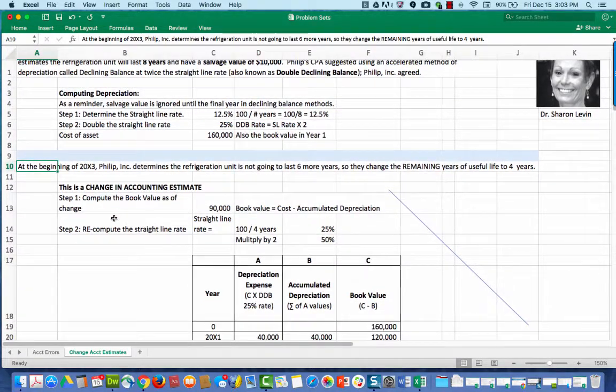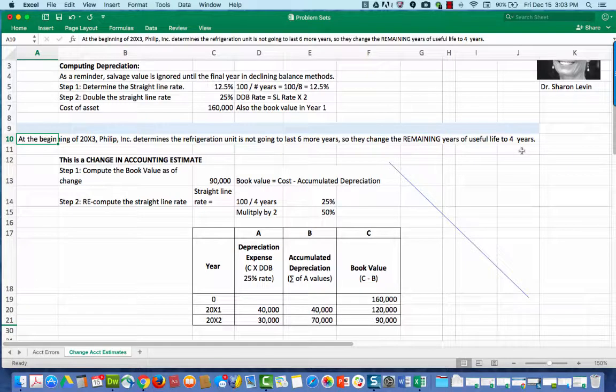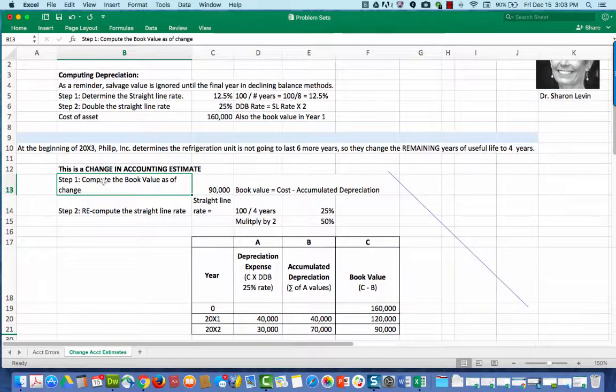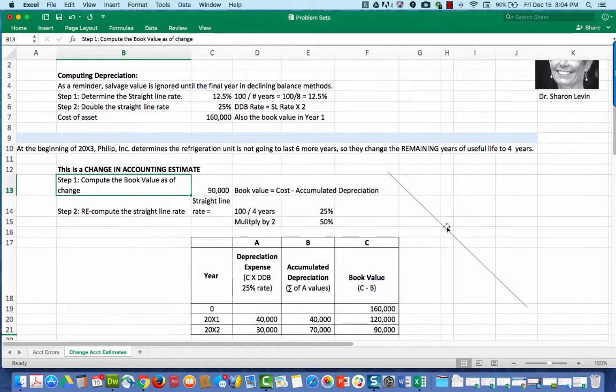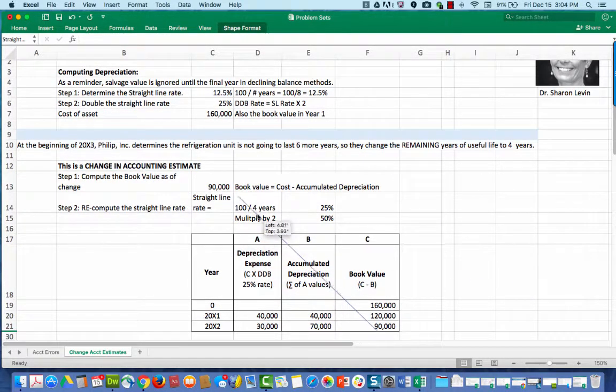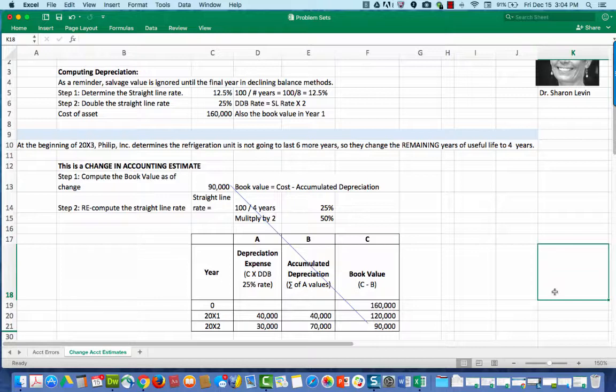So we change our estimate and say that from now moving forward, the refrigeration unit will last an additional four years from the beginning of 2003. So in total, it will last the two years that we've already recorded plus four more years. So a six year useful life is now what we're expecting. How do you record this change in accounting estimate? The first step is to compute the book value of the asset at the moment that the change was determined. Notice that it's $90,000 and that figure comes from this table. We've already computed the $90,000, which is the book value at the end of 2000X2, and therefore it is also the book value at the beginning of 2000X3.